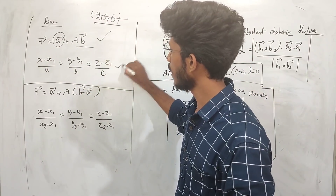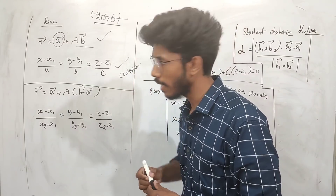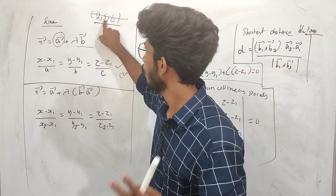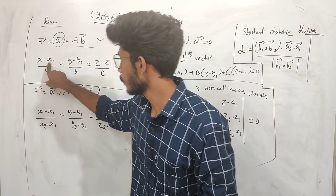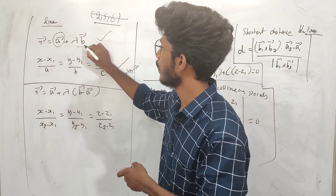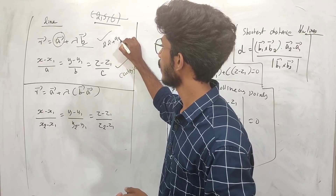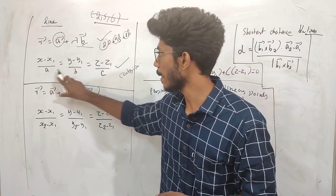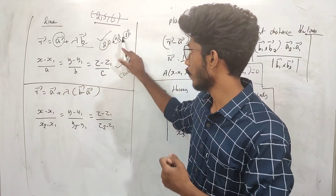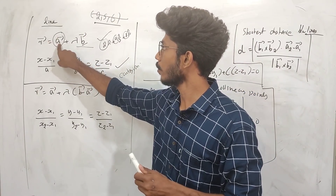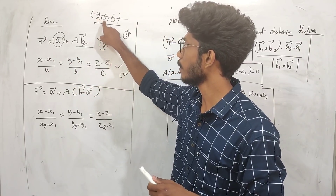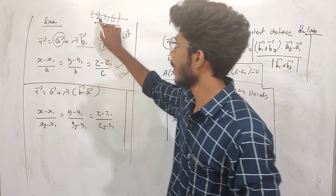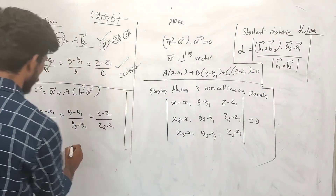The Cartesian equation: if point A is (x1, y1, z1), for example (2, 5, 6), then x1=2, y1=5, z1=6. Suppose the direction vector B = 2i + 9j + 8k, so the coefficients are a=2, b=9, c=8. The Cartesian formula is (x − x1)/a = (y − y1)/b = (z − z1)/c.